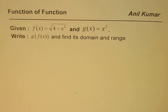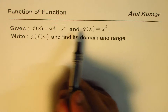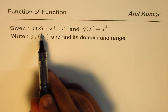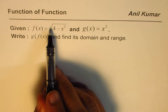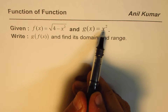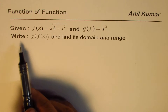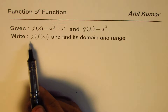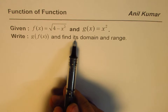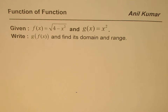I'm Anil Kumar. We'll discuss function of function in this video. We have very interesting functions in this particular case. We are given f of x as square root of 4 minus x square and g of x equals to x square. We need to write the composite function g of f of x and find its domain and range.